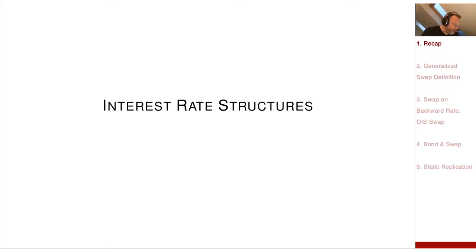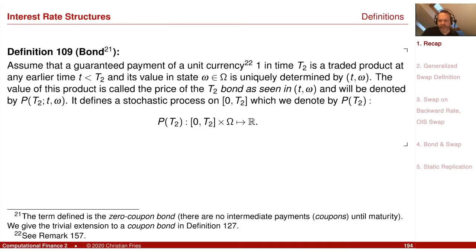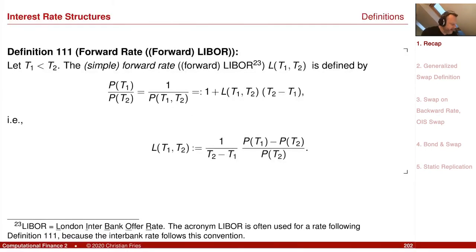We introduced two basic products. The first one was the zero coupon bond, a guaranteed payment of one unit at a future point in time. What is the value today at the observation point? There is no issue or default — it is guaranteed. From this product, we derived the forward rate, which is more or less the performance of investing in the short bond and in the long bond.